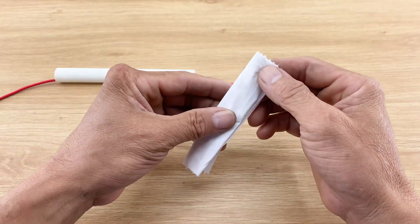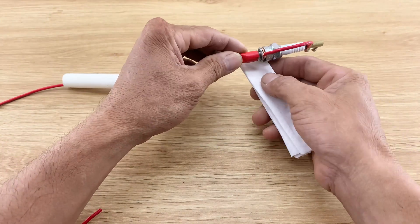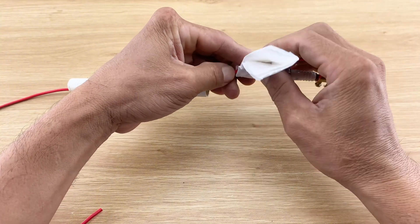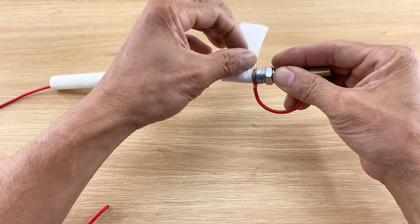To further enhance the grip, I wrap a small piece of white paper around the spark plug. This adds a comfortable texture and ensures a firm hold during use.